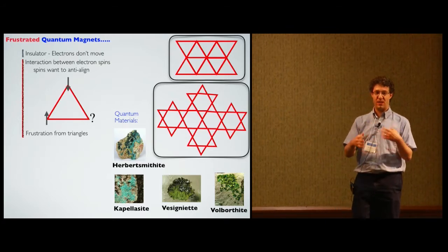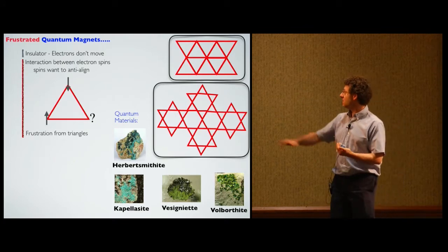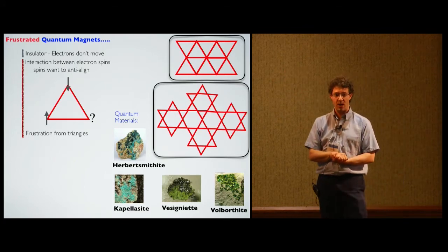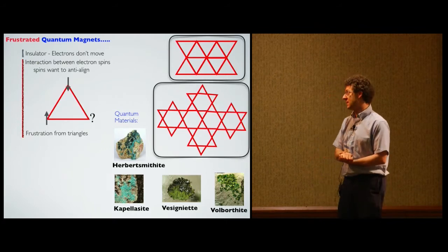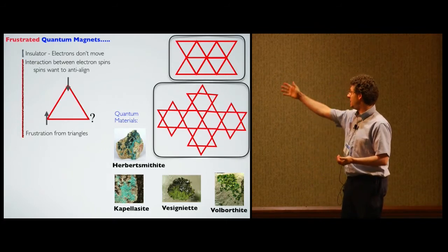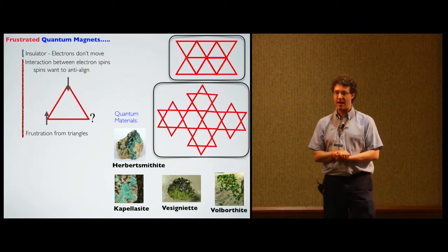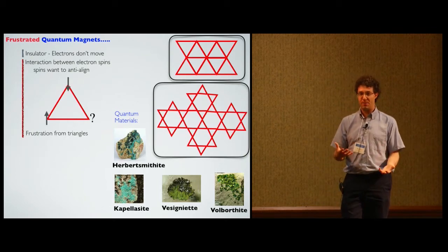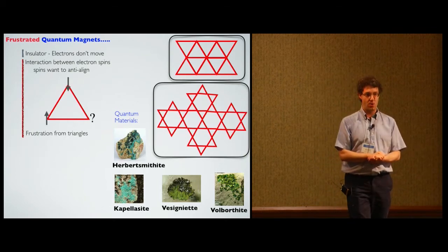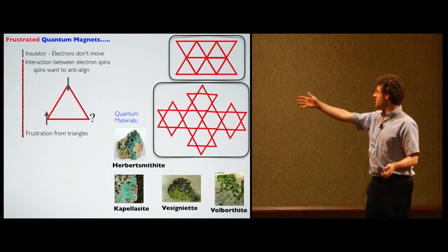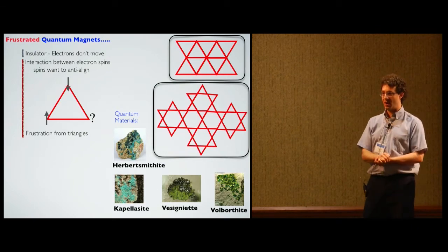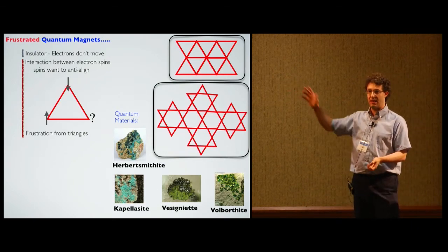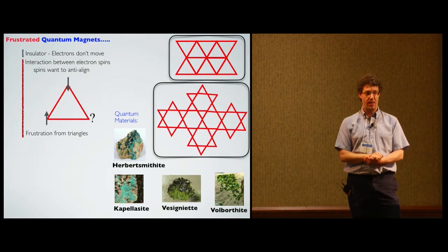You can get all sorts of exotic and interesting phases. At the top, that's a triangular lattice — triangles pasted together by sides. Down here is the Kagome lattice, which is corner-sharing triangles. That's what I'll be talking about most today. There are lots of minerals — just rocks you might find in the ground — that have spins living on these sorts of lattices.